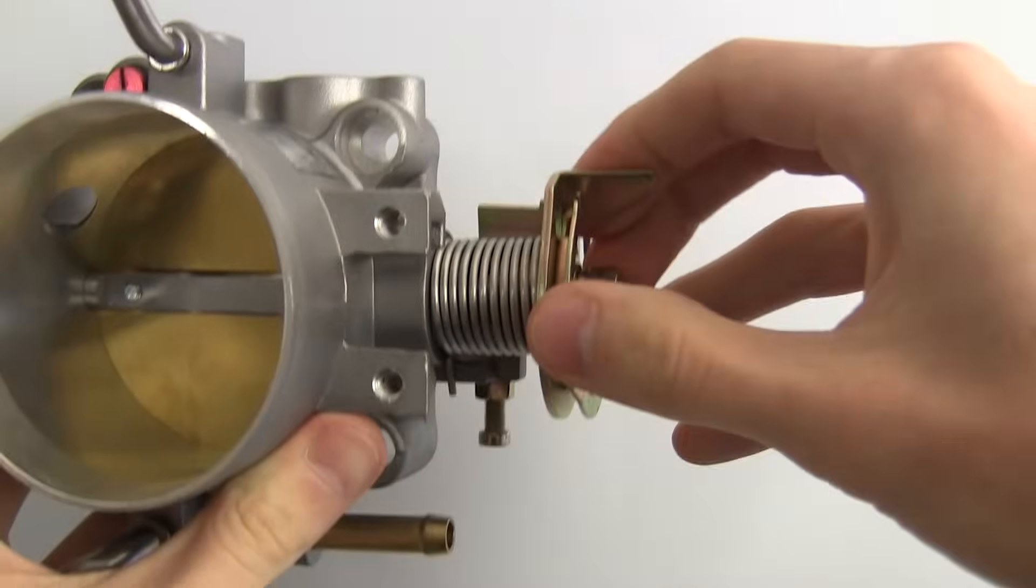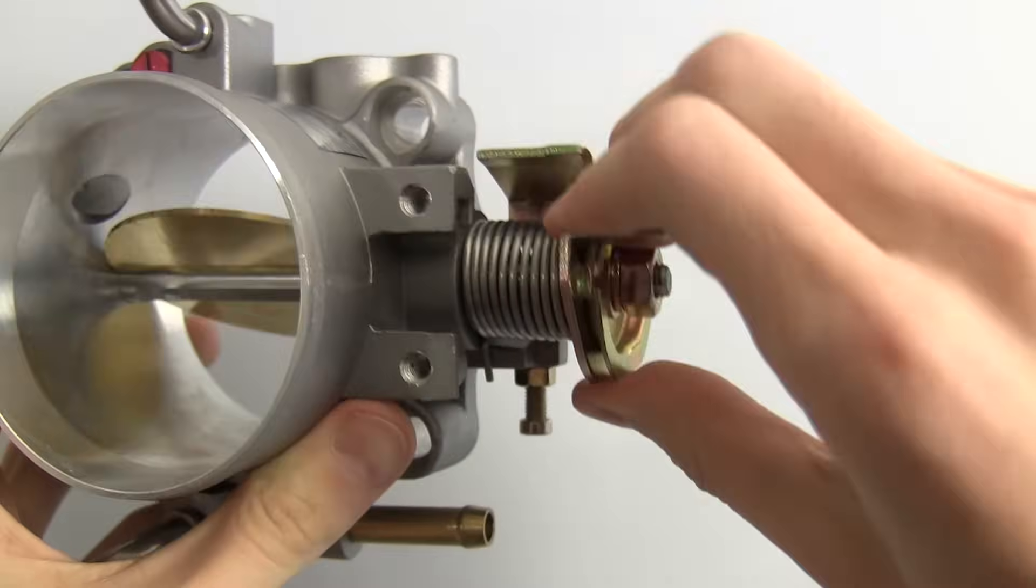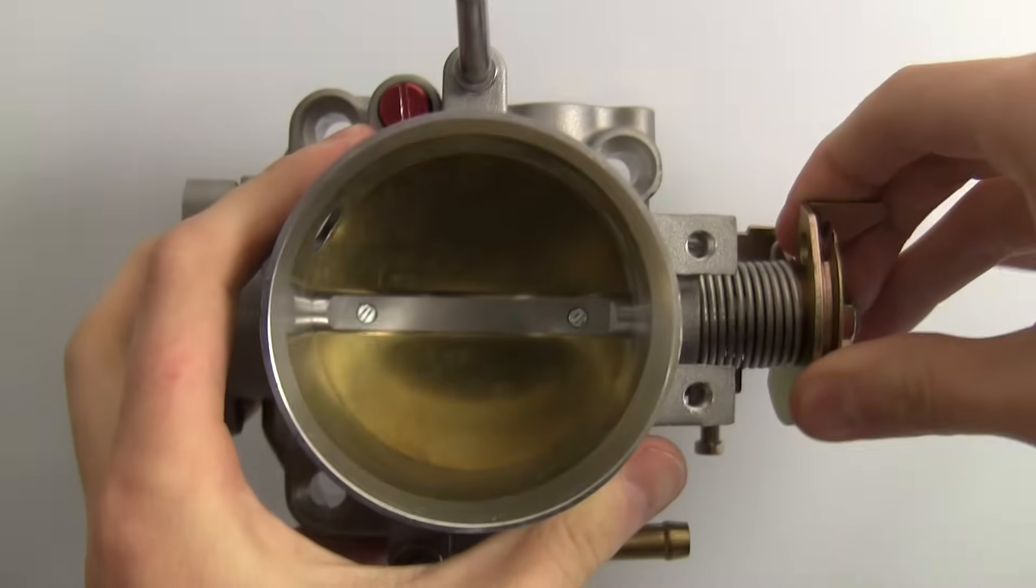As you press down on the gas pedal which is connected to the throttle cable, you'll be turning this and then opening up the butterfly valve to allow airflow.